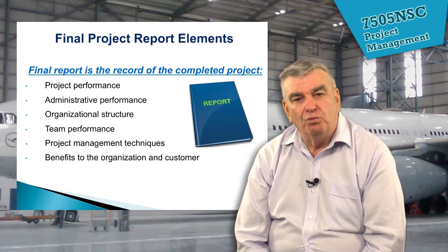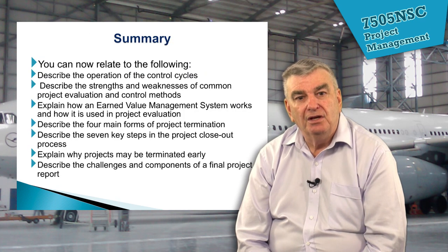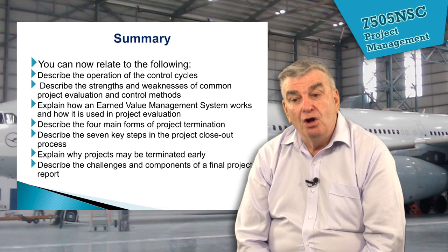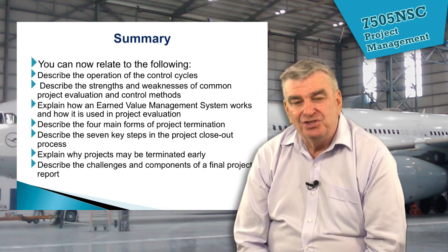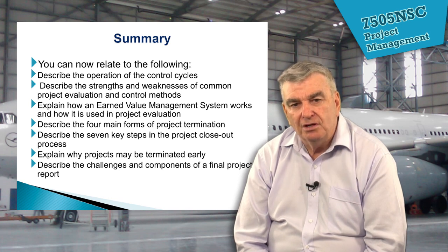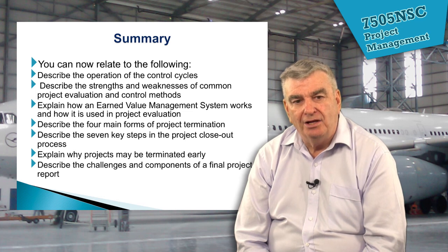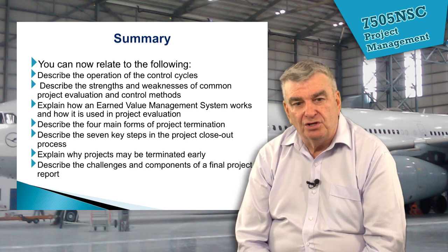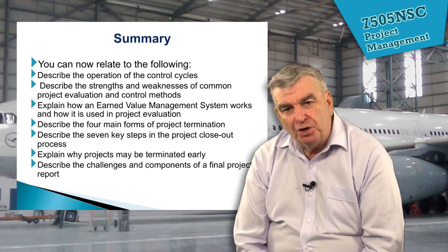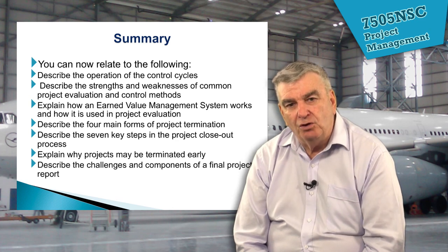In summary, we've looked at the project control cycle, the strengths and weaknesses of different control methods, and earned value management — seeing how it provides the two important metrics, CPI and SPI, to tell the project manager immediately how the project is going in terms of schedule efficiency and spending efficiency. We've also covered the four different forms of termination, the seven steps in the project closeout process, why closeout is sometimes not done well, and the challenges and components of the final project report — ensuring it accurately captures how the project performed to help us do a better job in the future. Thank you.